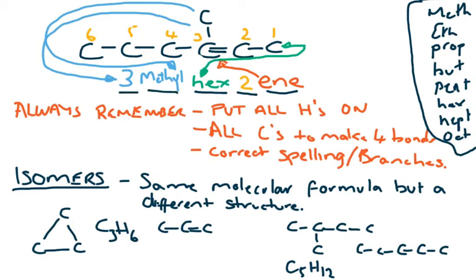It is always best to name from the reverse end. So -ene, then add the double bond 2, then add the longest carbon chain hex, then the branch methyl, then the number of the carbon for that branch. Always remember, make sure you add all the H's. Every carbon has to make four bonds. Ensure that the spelling is correct. And always number to give the lowest possible numbers.